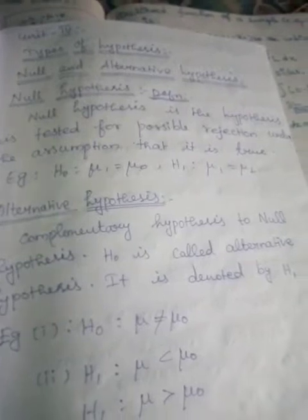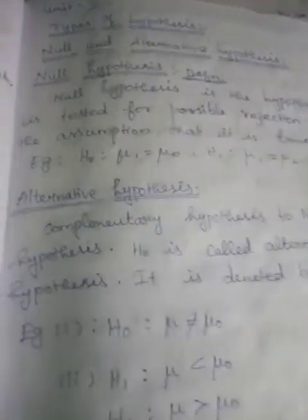Null hypothesis definition: The null hypothesis is the hypothesis tested for possible rejection under the assumption that it is true. Example: H0: μ1 = μ0. The complementary hypothesis to the null hypothesis H0 is called the alternative hypothesis.